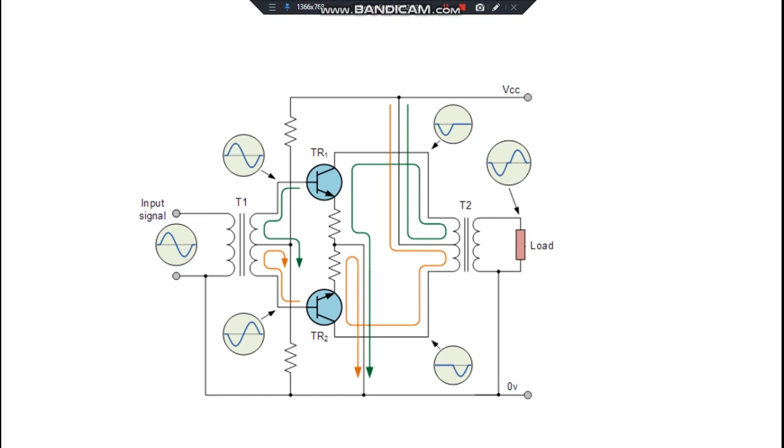For one half of the cycle it is the NPN transistor that conducts, whereas for the next half it is the PNP transistor that is going to conduct. Hence, this output signal that you get looks like this.